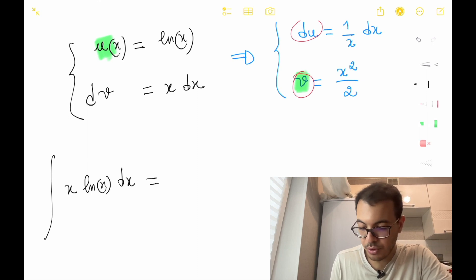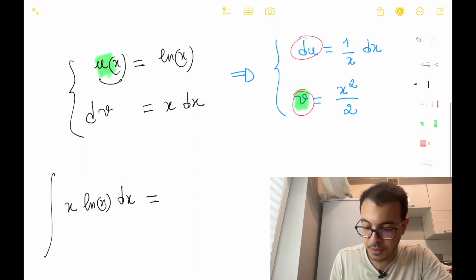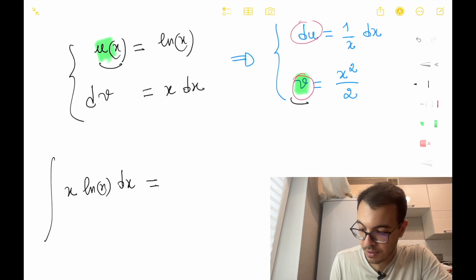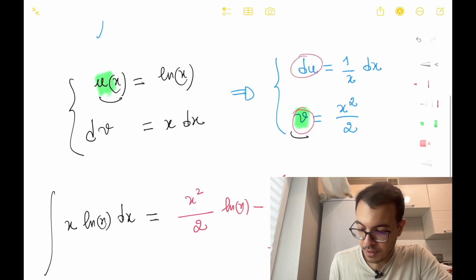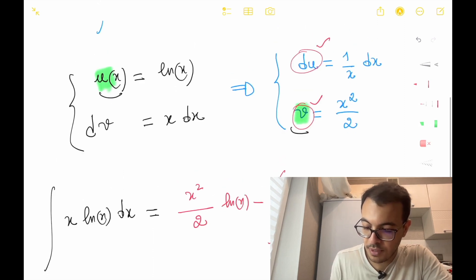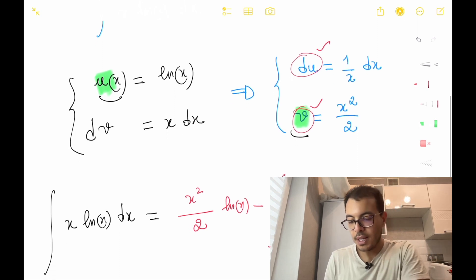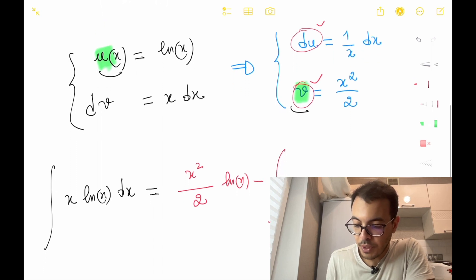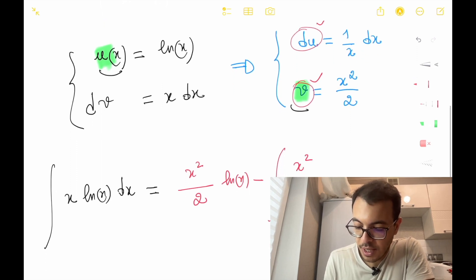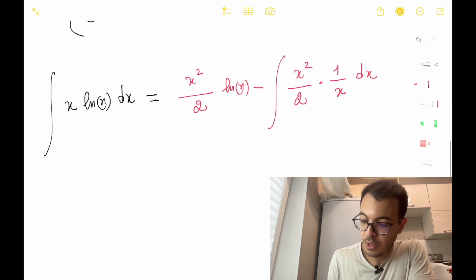We have x squared over 2 times ln(x) minus the integral of x squared over 2 times 1 over x dx. We can simplify here. This gives us x squared over 2 times ln(x) minus the integral of x over 2 dx.